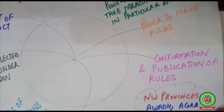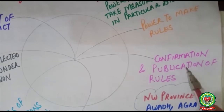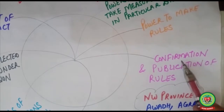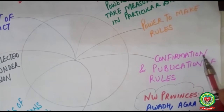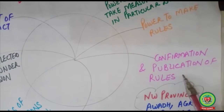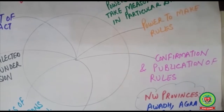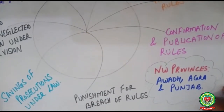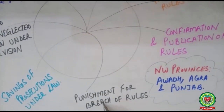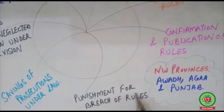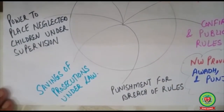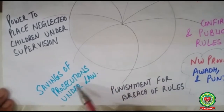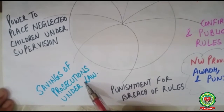The third provision was confirmation and publication of rules. The British government had the power to get confirmation on the female infanticide bill from enlightened, educated people of India, and after that publish the rules and regulations in famous journals and newspapers. The next provision was that the British government could punish those violating the rules and regulations — punishment for breach of rules. All legal proceedings were to be recorded so they could be helpful for the British government in making any law.